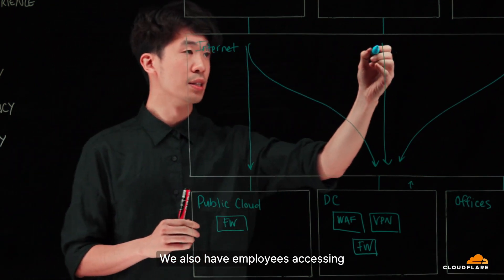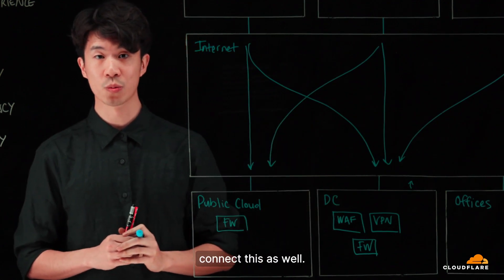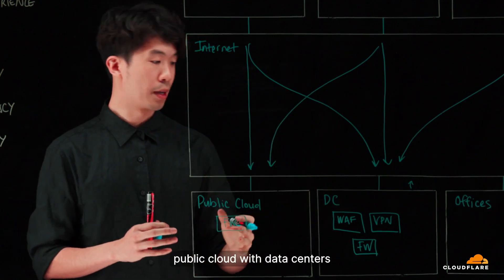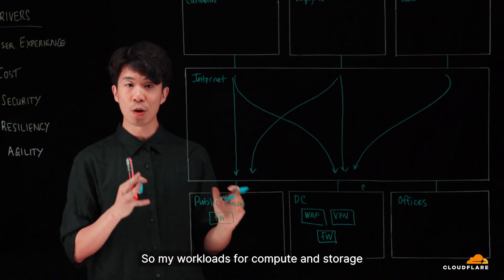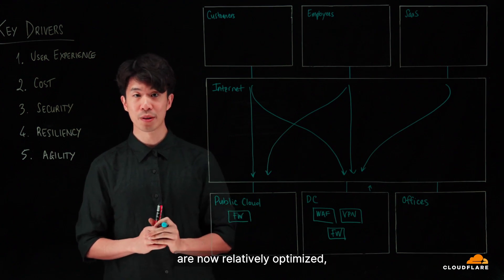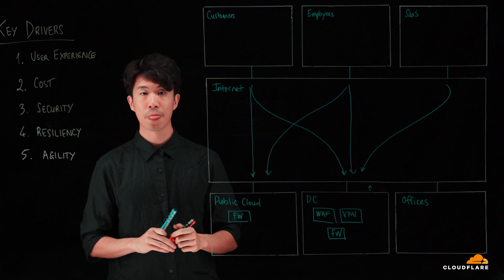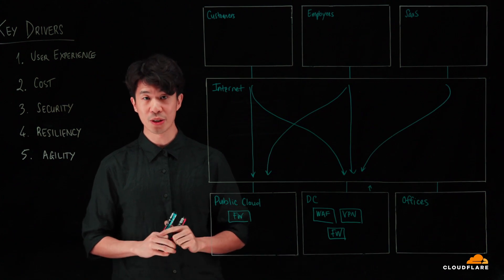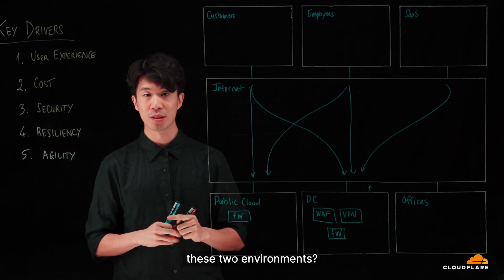We also have employees accessing resources in the public cloud and so we're able to connect this as well. We can connect our public cloud with data centers as well as offices and provide connectivity here. So my workloads for compute and storage are now relatively optimized, but how do I ensure consistent secure networking? How do I ensure secure access to applications for my employees consistently between these two environments?